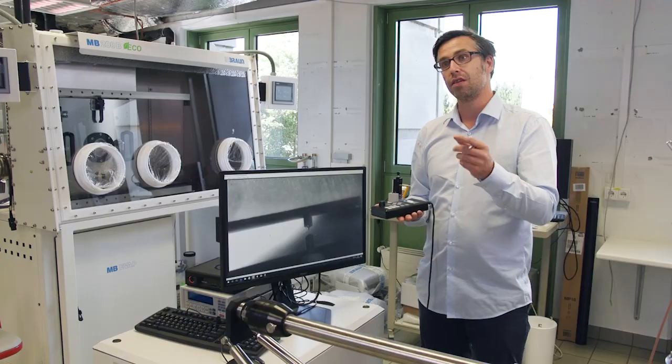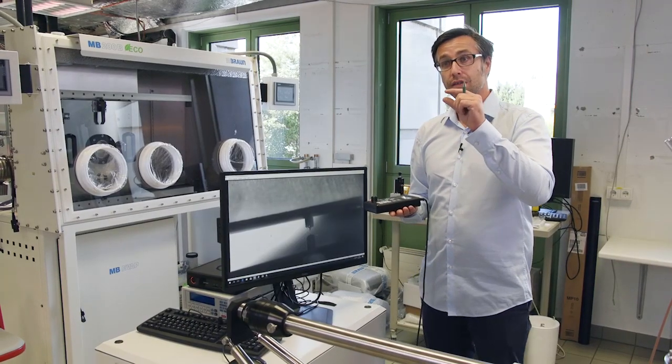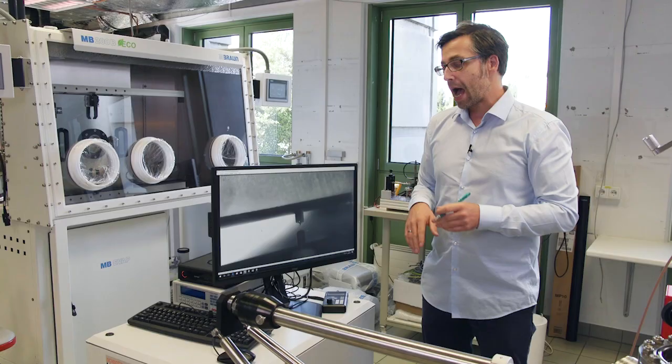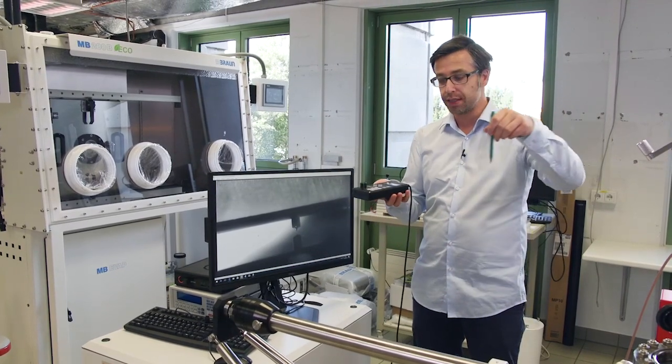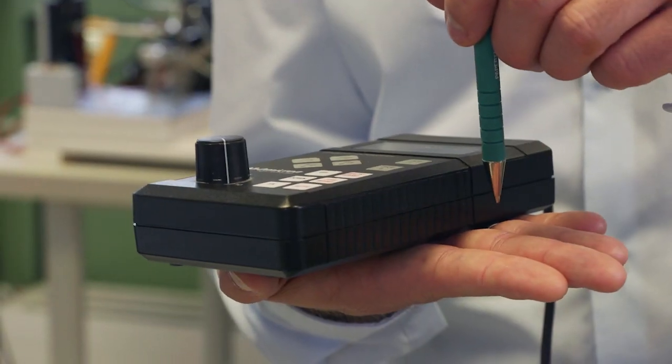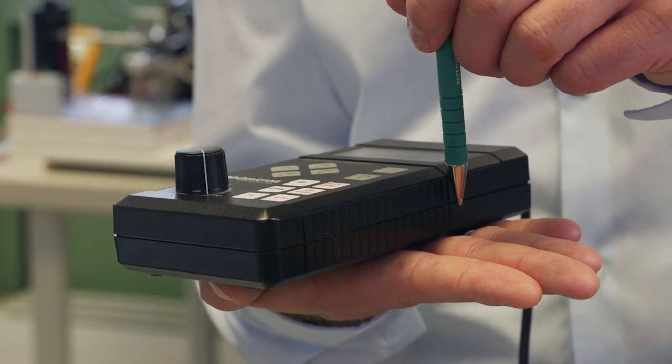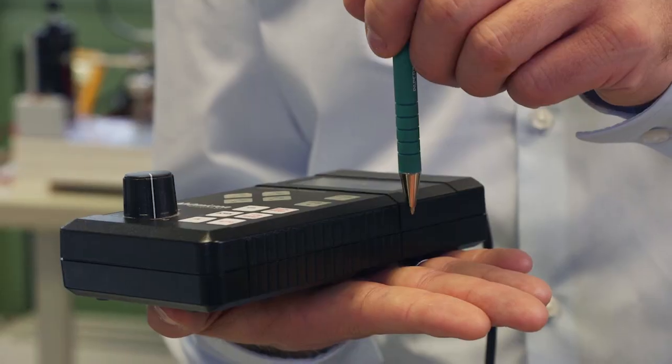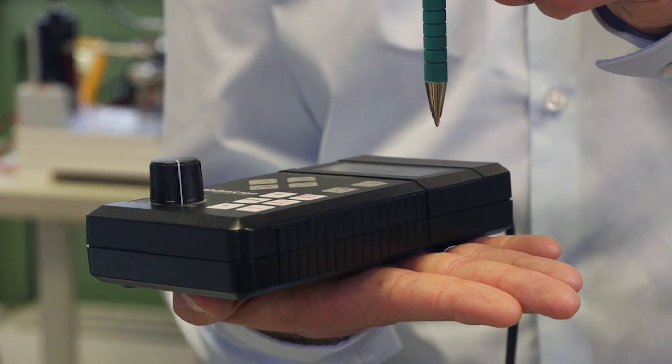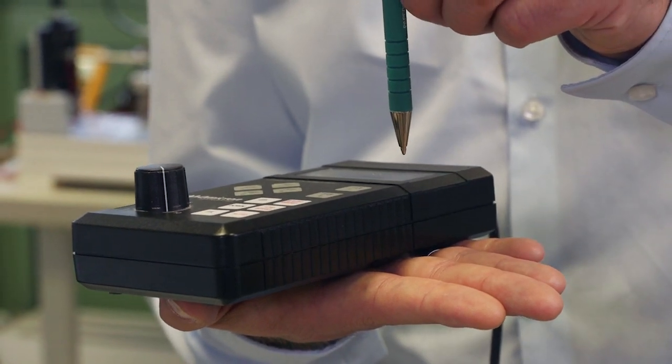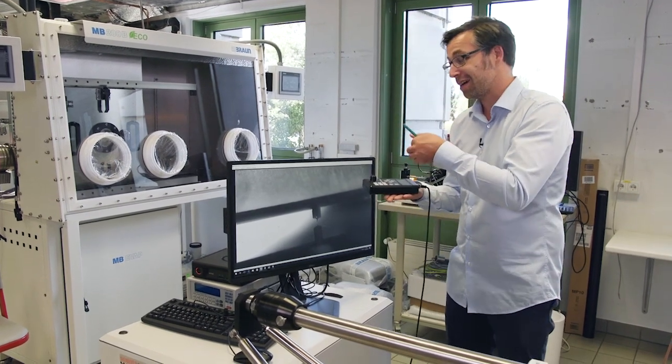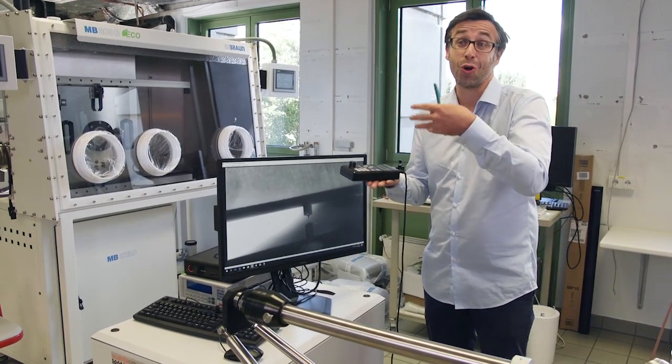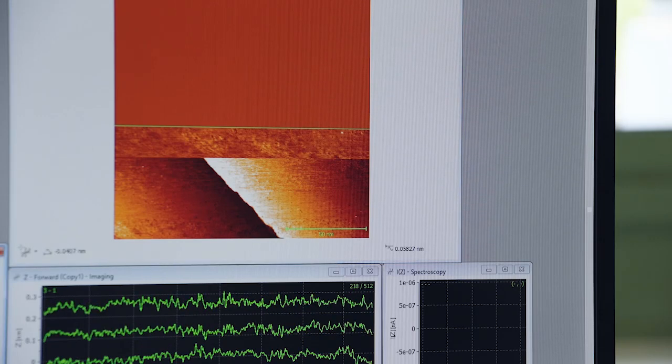If we change the distance only by one atom, you roughly change the current by a factor of 10. And now let's imagine, now we have a surface and we start moving our tip, and now there's a hill. Since we're getting closer, we're actually getting more current. So then it retracts the tip to keep the current constant, and then continue scanning. And this we do line by line, and then essentially you get a contour plot of your surface topography.